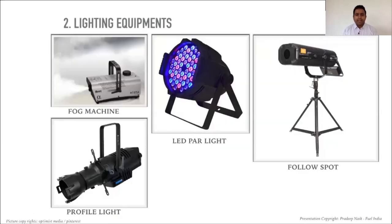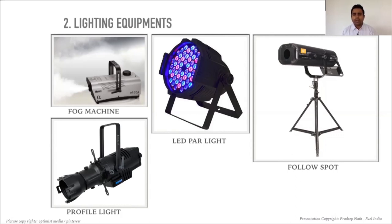The next category is lighting equipment. There are plenty of options, but these are the basics found in every event. If you've been to any event, just look up at the truss and you'll be able to see most of these elements. The first one is a fog machine — as the name suggests, it creates a foggy effect on the stage, used when an artist enters, during a car launch, or for a dance performance that needs a foggy atmosphere.